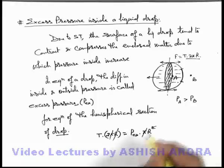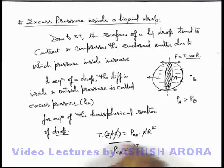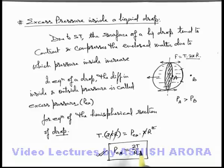The value of excess pressure inside a liquid drop we can write as 2T/r. I would advise you to keep this expression on your tips as it is one of the most important expressions for the excess pressure inside a liquid drop, which depends on the surface tension and the radius of curvature. Here we can see if the radius of curvature is less — if the drop is smaller — the excess pressure will be more, and if the drop is large, as radius increases the excess pressure will decrease.